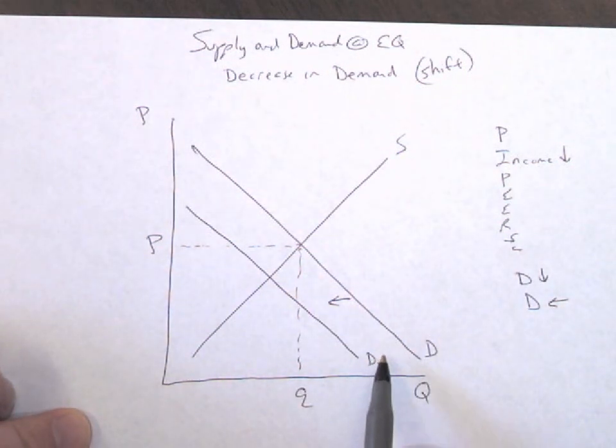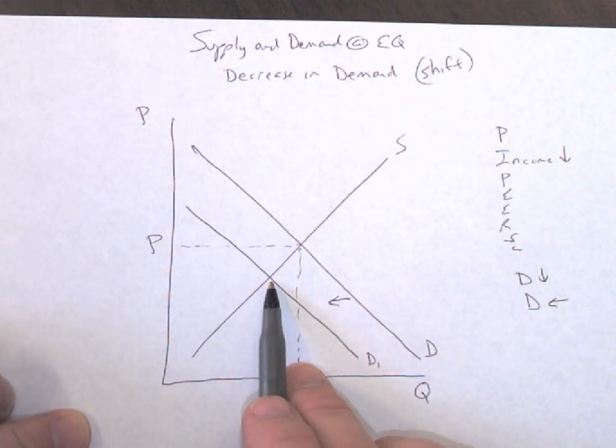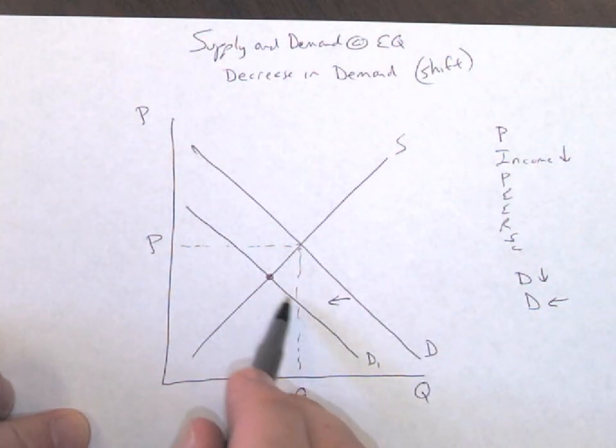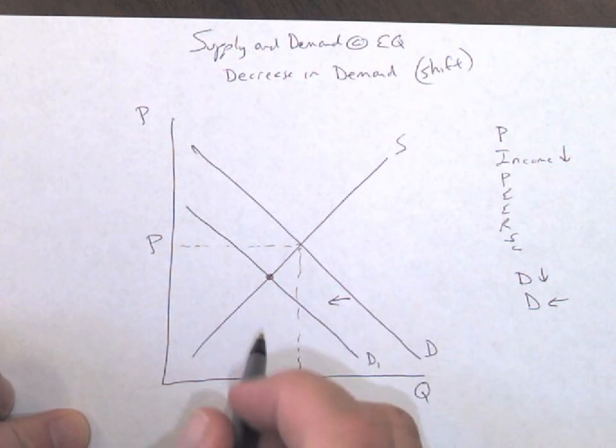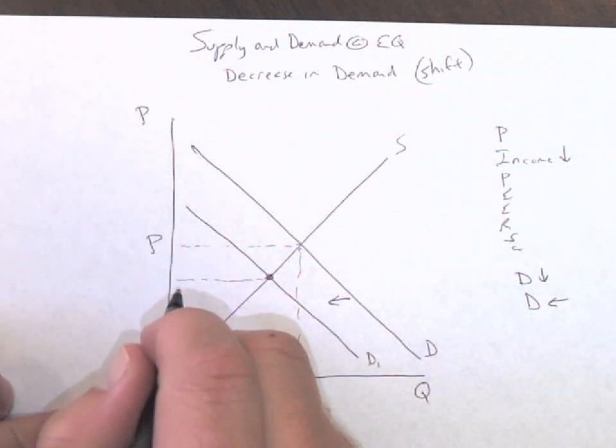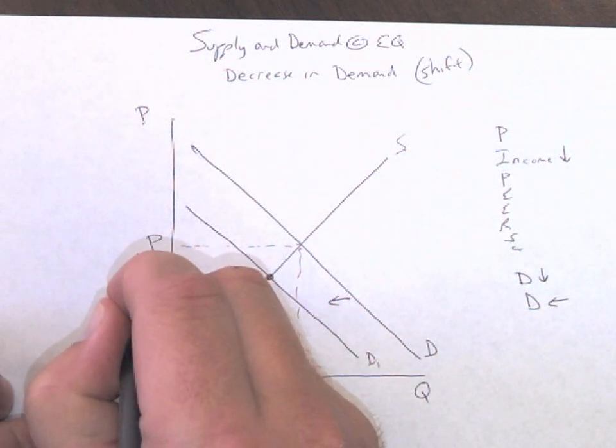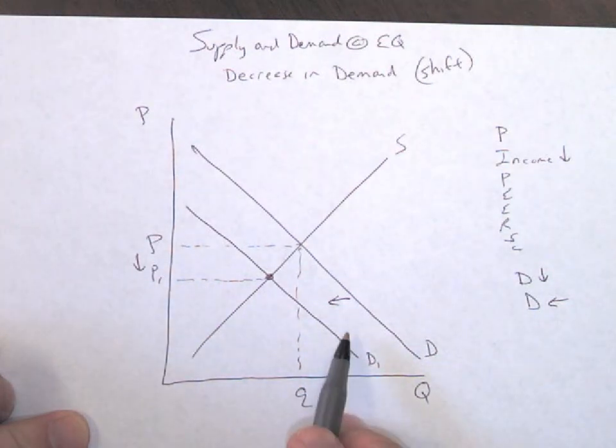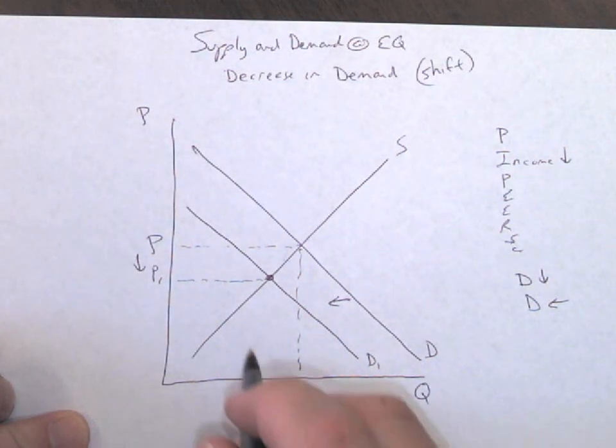So now I have a new demand curve with the same amount of supply or stuff on the shelf. So our new equilibrium, where D1 crosses our same supply curve, I know that people don't want stuff, the price will not remain high. So people don't want it, the price will go down. Also the quantity demanded will decrease.